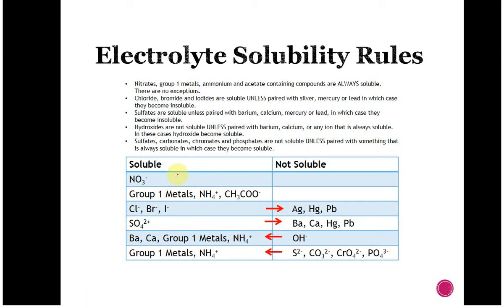Going through this: nitrates are completely soluble. It doesn't matter what you add to them — they're always going to be soluble. So it doesn't matter if we have nitric acid or silver nitrate — these are completely soluble. They are strong electrolytes. Anything with nitrate is going to be a strong electrolyte.